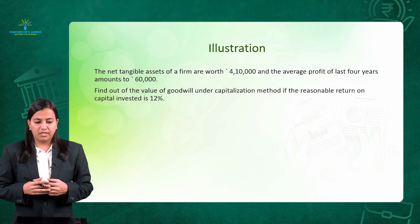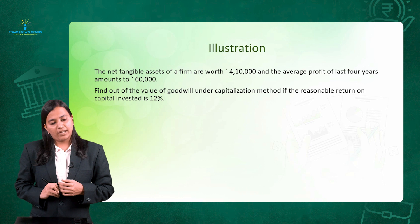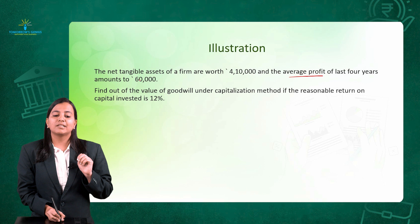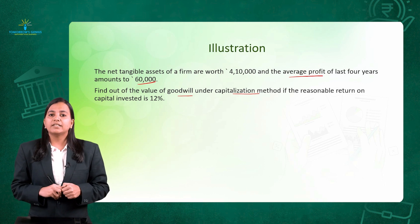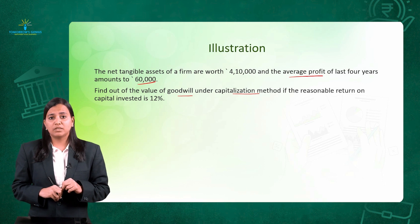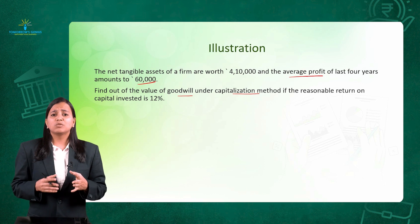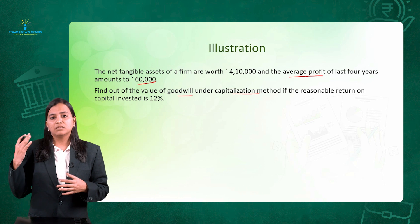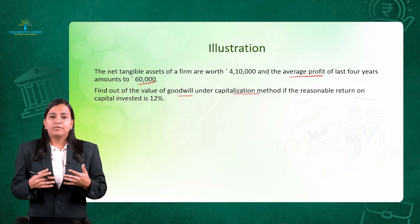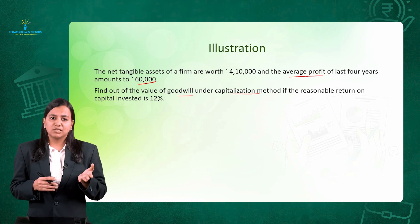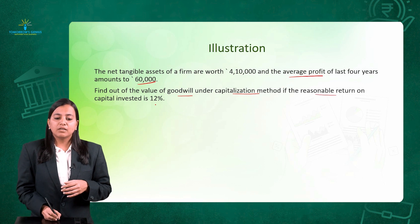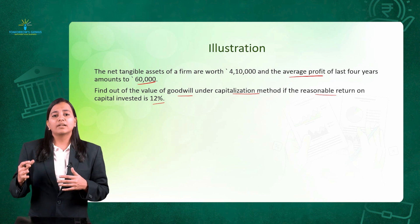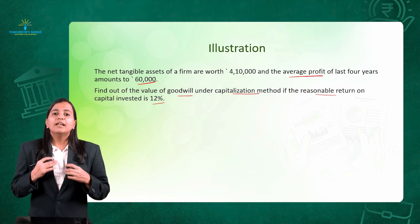Let's read the question carefully. The net tangible asset value is given as ₹4,10,000. The average profit for the last four years is directly given as ₹60,000. We are required to calculate Goodwill under the Capitalization Method. Since average profit is given and no data about normal profit is separately provided, we use the Capitalization of Average Profit Method. The reasonable return on capital invested is 12%, which is your Normal Rate of Return.